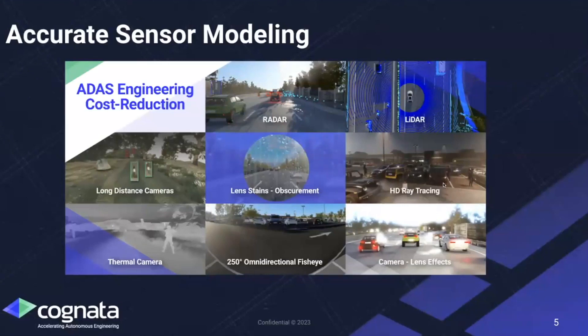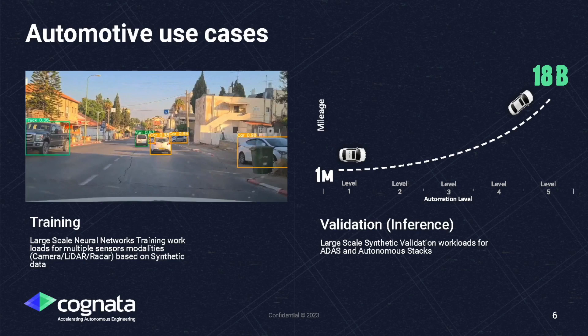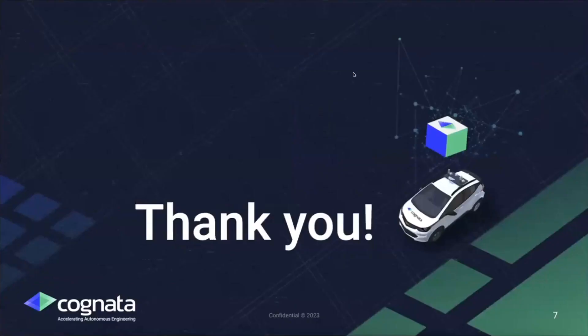To sum it up: radars, lidars, long-distance cameras, lens distortions and obstructions, omnidirectional cameras, thermal cameras, and other lens effects. We're helping with two kinds of use cases: first, providing data for training neural networks, and second, validation testing at large scale from ADAS to autonomous driving systems. Today we're targeting training, so without further ado I'll pass the ball over.